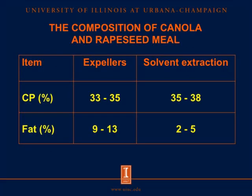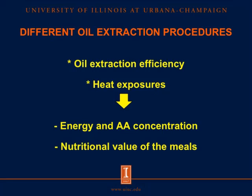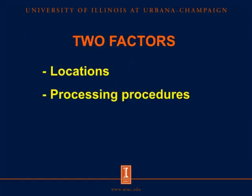For chemical composition of canola and rapeseed, the meal from expeller procedures contains crude protein ranging from 33% to 35% and fat ranging from 9% to 13%. The meal from solvent extraction contains crude protein ranging from 35% to 38% and fat ranging from 2% to 5%. The differences in oil extraction efficiency and heat exposure between the two procedures could affect energy and amino acid concentration in the meal, and consequently affect nutritional values. Factors affecting the quality of canola and rapeseed meal include the locations where they are grown and the processing procedures used to remove oil.